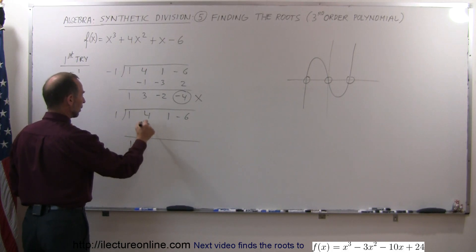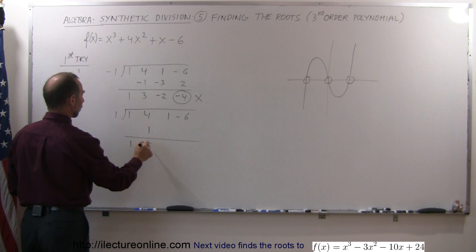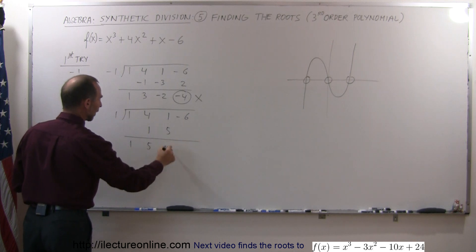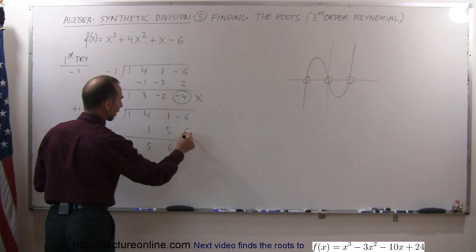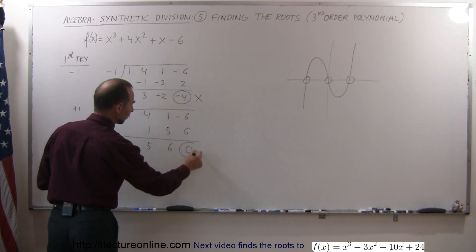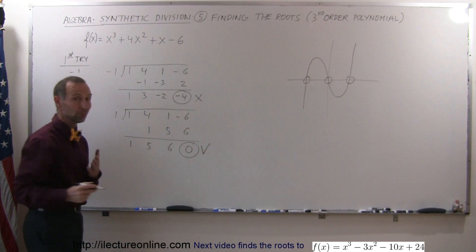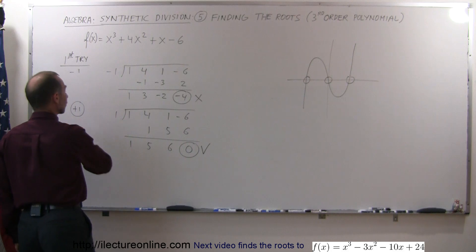1 times 1 is 1. 1 plus 4 is 5. 5 times 1 is 5. 1 plus 5 is 6. 6 times 1 is 6. And look at that, that adds up to 0. And we say, bingo, we found one of the roots. The root is plus 1.